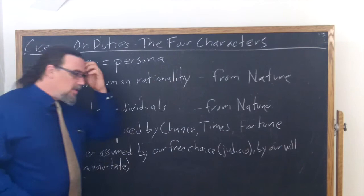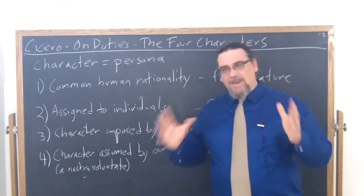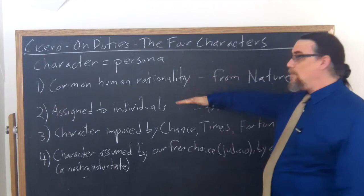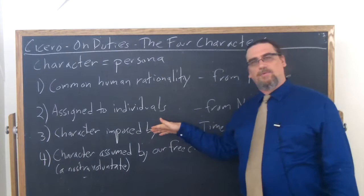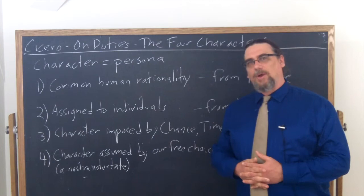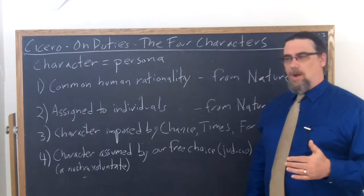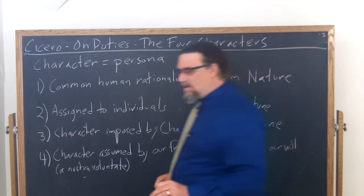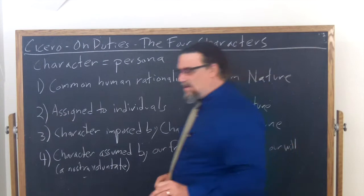Whereas the other characters can be from nature or from fortune, this fourth one is really from ourselves — this is where we make ourselves into what we're going to be. To use a Stoic example: Cato, whom Cicero looks at as the Stoic par excellence, had common human rationality, probably had strong temperaments steering him certain ways, rose to the occasion provided — but it was through his free choice that he maintained an exemplary Stoic life, fought Caesar under Pompey, lost along with Pompey, and committed suicide. Cicero even uses this as an example: committing suicide could be okay for a Cato, but not good for somebody else.